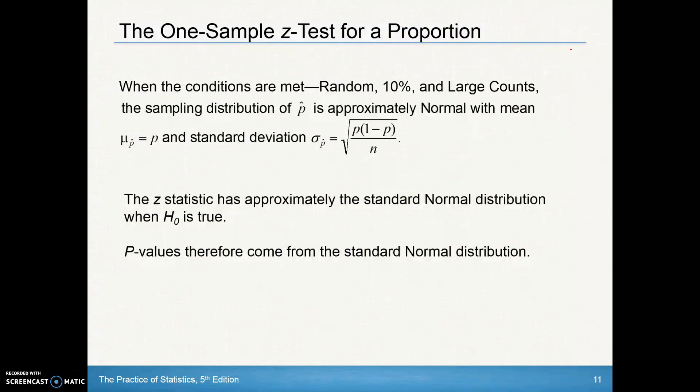So when the conditions are met, when these three conditions are met in the second box for inference, okay, the SIN part, the random sample, the independence, and the normality, the large counts piece. We know that the sampling distribution of the p-hats is approximately normal with a mean of p and a standard deviation of the square root of p times q over n.